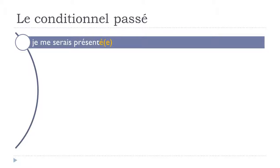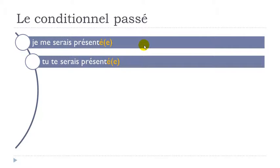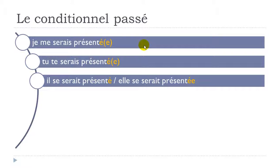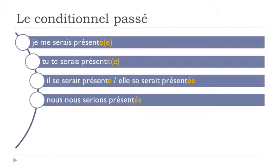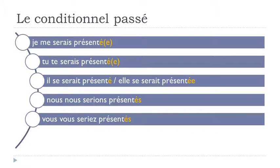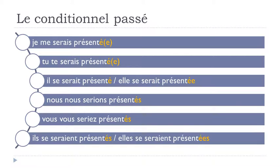And one example with a reflexive verb — se présenter: je me serais présenté, tu te serais présenté, il se serait présenté, elle se serait présentée, nous nous serions présentés, vous vous seriez présenté, ils se seraient présentés, elles se seraient présentées.